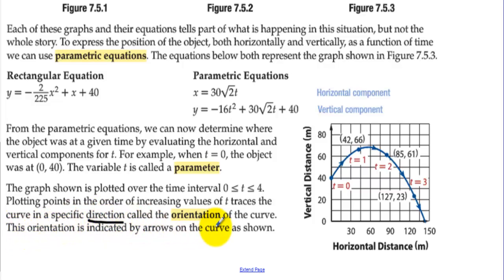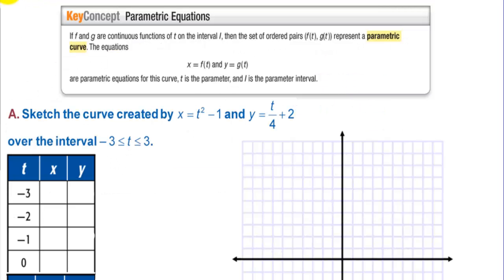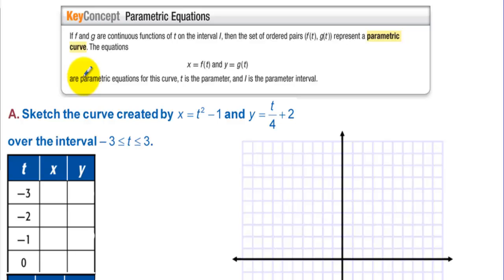The variable t is called the parameter. The graph shown is plotted over the time interval 0 to 4. Plotting points in the order of increasing values of t traces the curve in a specific direction. Unlike some of the equations we've seen, parametric equations have direction, called the orientation of the curve. This orientation is indicated by arrows on the graph. If f and g are continuous functions of t on the interval i, then the set of ordered pairs f(t), g(t) represent a parametric curve. The equations x = f(t) and y = g(t) are parametric equations for this curve. t is the parameter and i is the parameter interval.